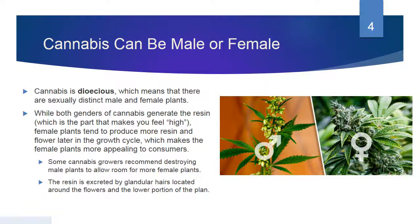A little fun fact: cannabis can be a male or a female. On the left-hand side, we have the male symbol — the plant tends to be taller and the leaves more sparse. On the right is the female plant, which has much more tightly budded, flowered tops. Cannabis is technically called dioecious, which means there are sexually distinct male and female plants. While both genders generate the resin — the part that makes you feel high — female plants tend to produce more resin and flower later in the growth cycle, which makes female plants more appealing to consumers.